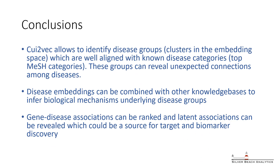In summary, our findings indicate that disease embeddings generated from massive health-related data can be used to identify disease groups closely aligned with known disease classes, and also to find unexpected connections between diseases from different classes. Disease embeddings could also be combined with annotated knowledge bases to reveal common mechanisms underlying disease types. Finally, they can be used to predict latent gene-disease associations and novel drug targets. Importantly, our methods should allow making such predictions for conditions with no known associated genes, such as rare and orphan diseases.